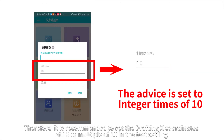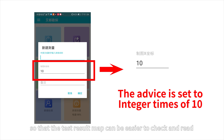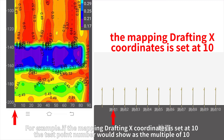Therefore, it is recommended to set the drafting x-coordinates at 10 or a multiple of 10 in the test setting, so that the test result map can be easier to check and read. For example, if the mapping drafting x-coordinates is set at 10, the test point number would show as a multiple of 10.